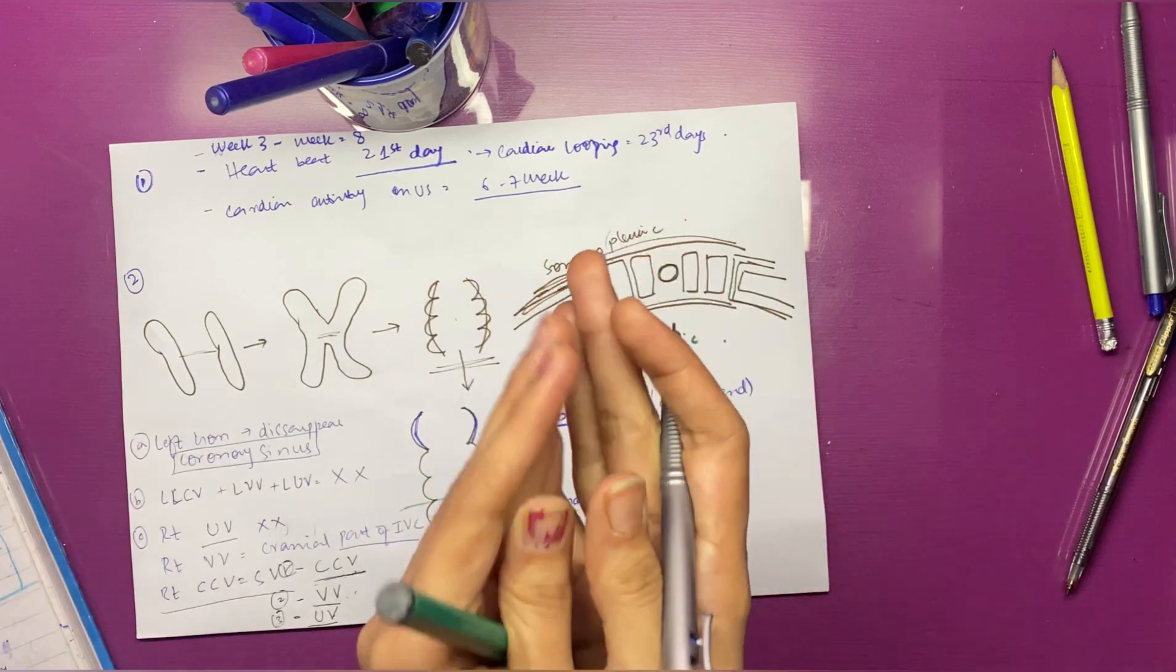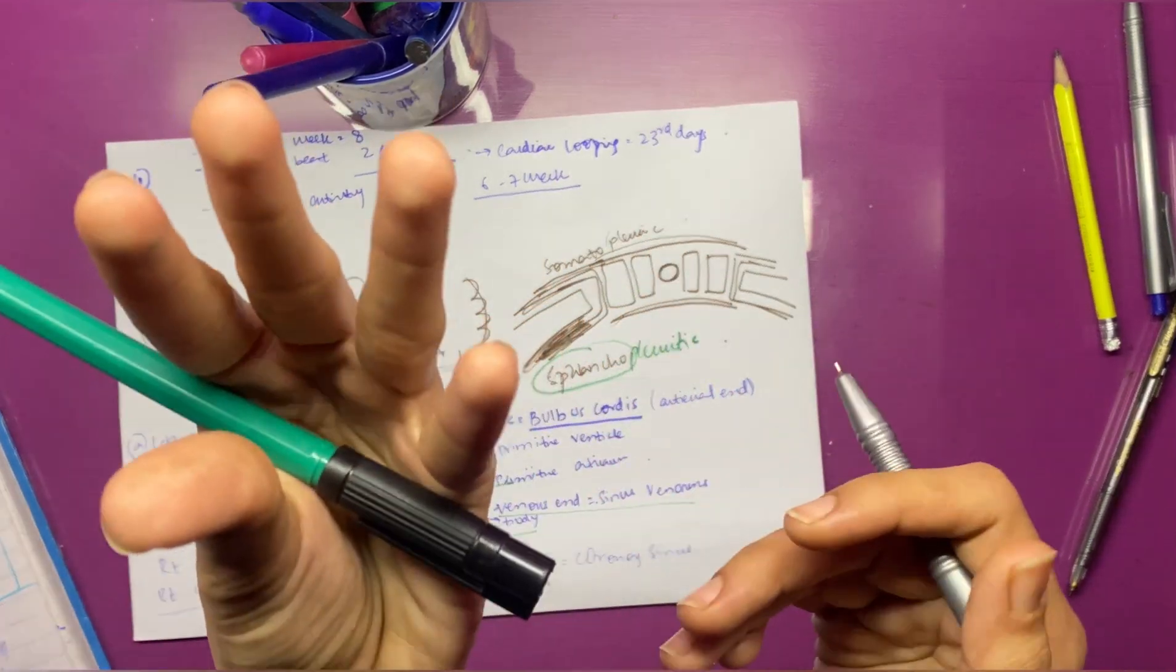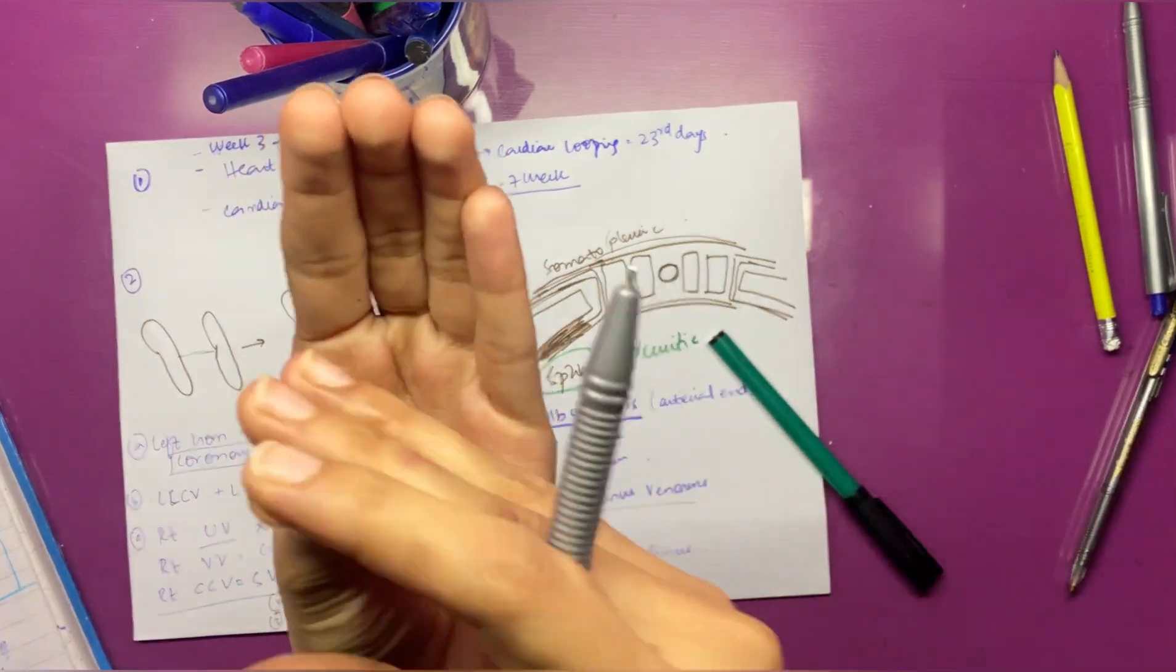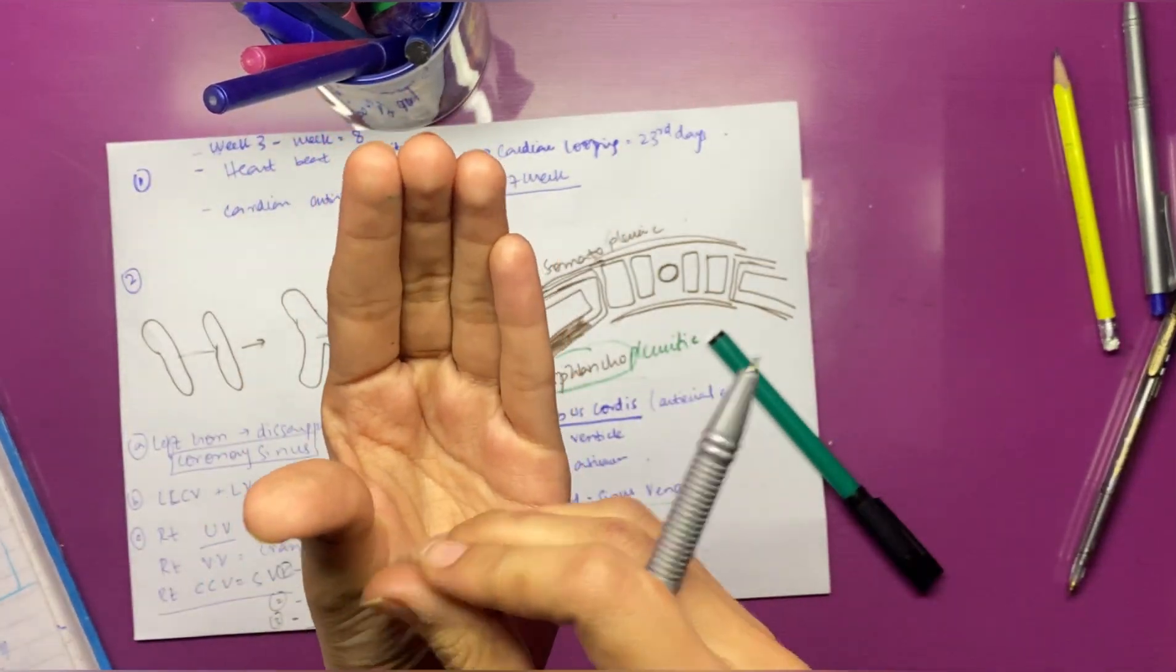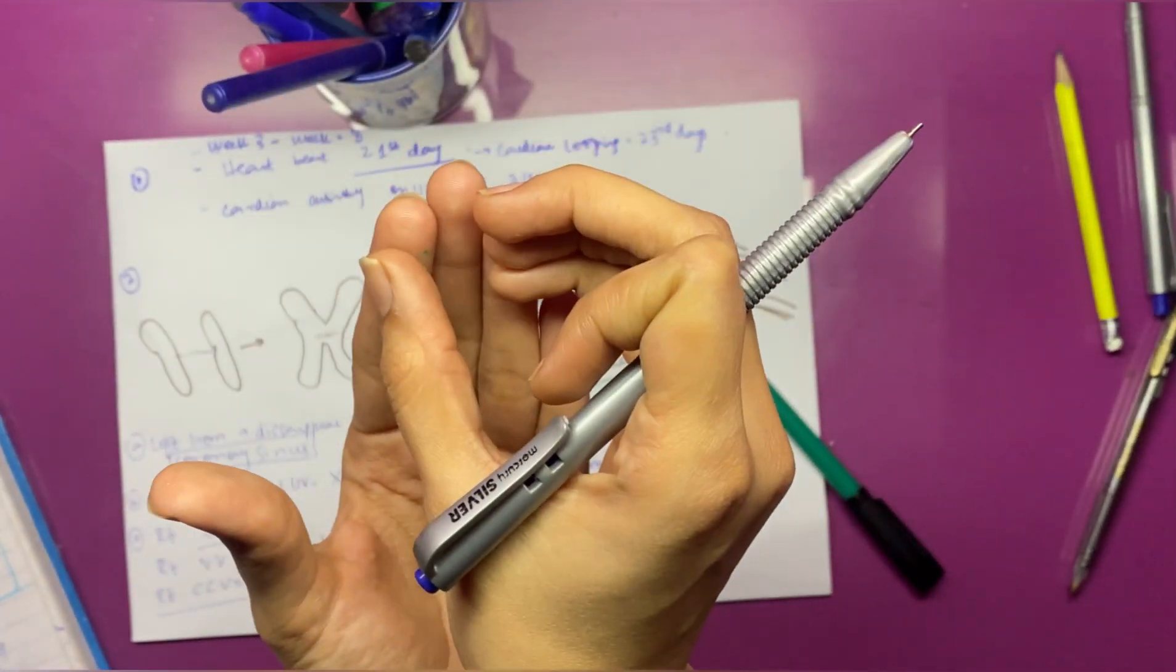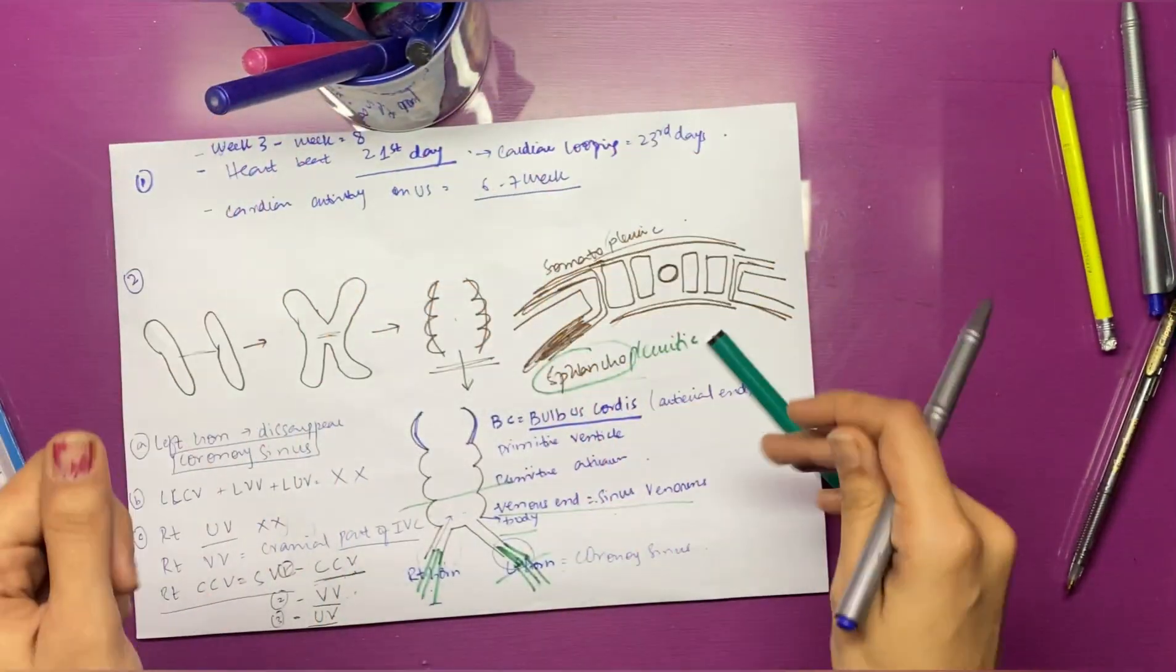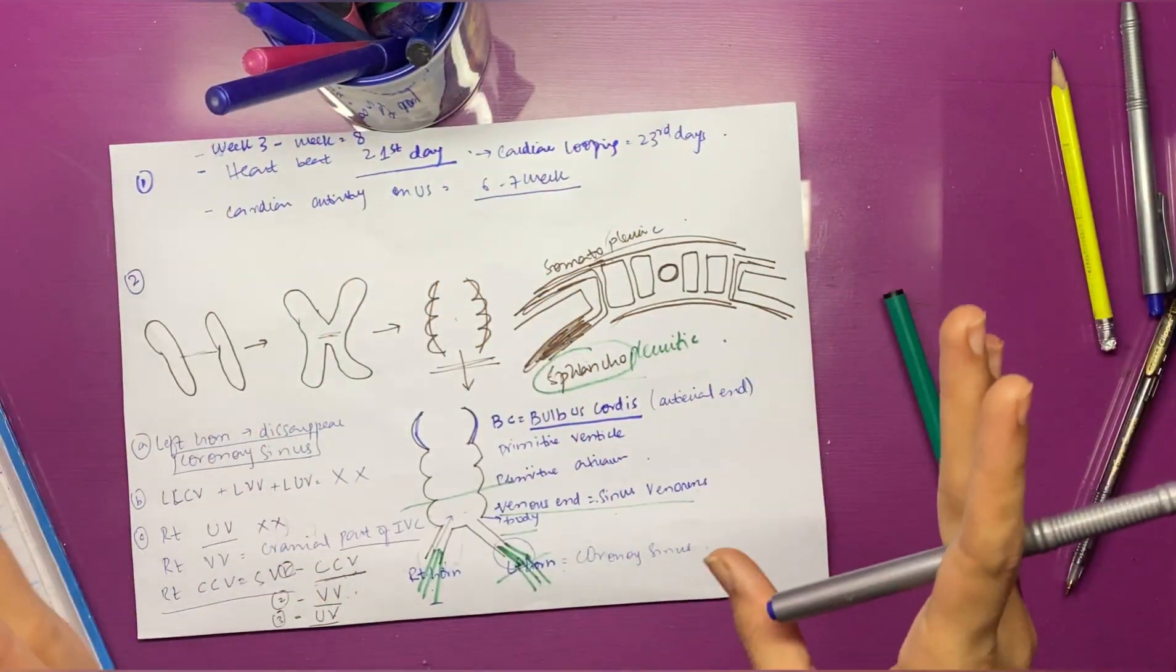Relating this to normal anatomy: the right atrium has two parts—anterior and posterior. In the posterior part, we have the superior vena cava entering from above and the inferior vena cava entering from below. Just remember this point.